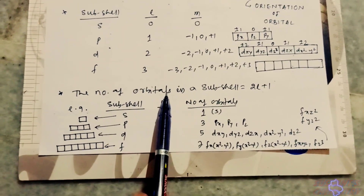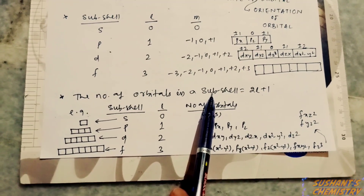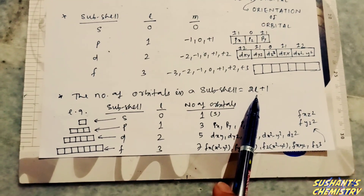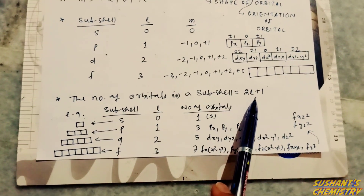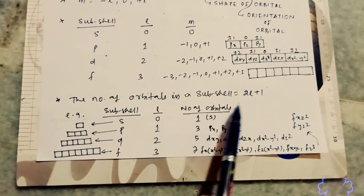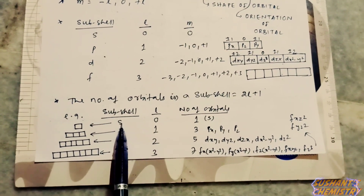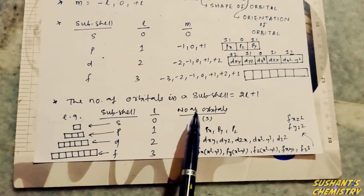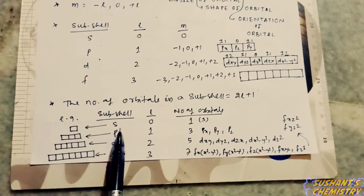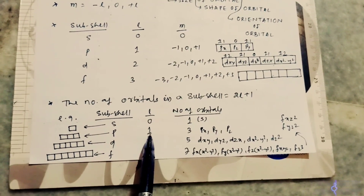The number of orbitals in a subshell can be calculated using the formula 2l plus one, where l is the azimuthal quantum number. For the s subshell, l equals zero; putting zero gives one — meaning the s subshell contains one orbital. For the p subshell, l equals one; putting one gives three, so the p subshell contains three orbitals: px, py, pz.